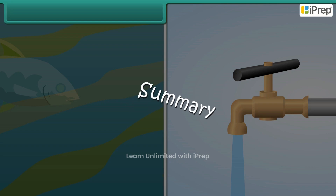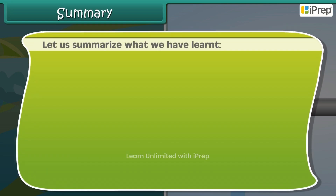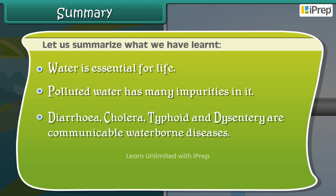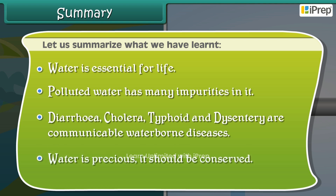Let us summarise what we have learnt. Water is essential for life. Polluted water has many impurities in it. Diarrhea, cholera, typhoid, and dysentery are communicable waterborne diseases. Water is precious and should be conserved.